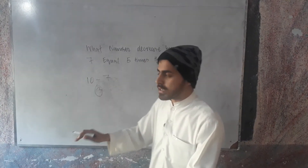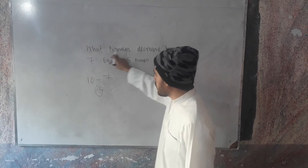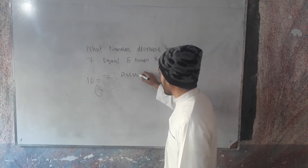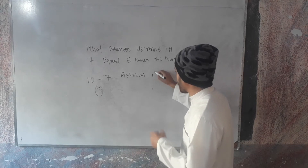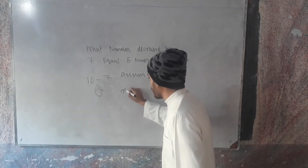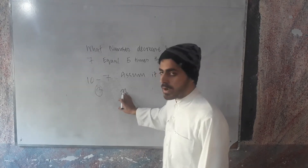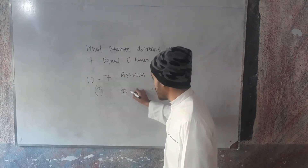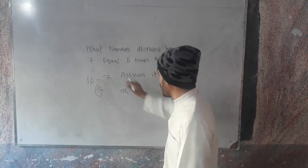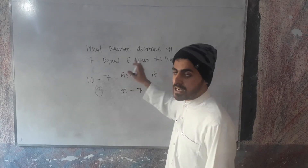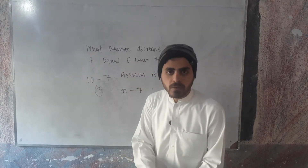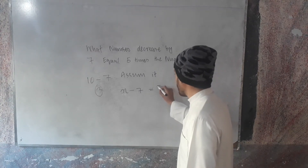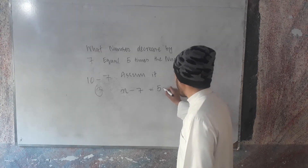So here I assume the number is x. We have to find the value of x. 'What number decreased by 7' means x minus 7, and 5 times the number means 5 times x.